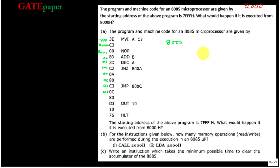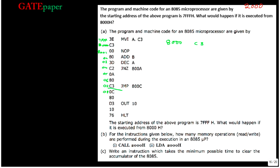We are interested in only address 8000H. If the program is starting from 8000H, then 8000H will be taken as C3. C3 is the opcode. While executing, the first byte is always treated as an opcode fetch. So whatever is read — C3 — will be treated as opcode. C3 is nothing but the jump instruction — the unconditional jump instruction.